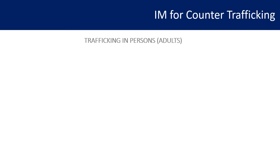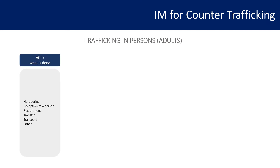Trafficking in persons, when referring to adults, presents three key components. The first is Act — what is done. By act, we mean, for instance, harbouring, reception of a person, recruitment, transport, transfer, and any other action that might be attributable to the trafficker.